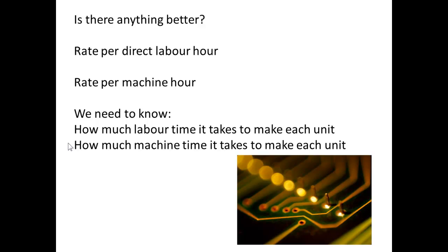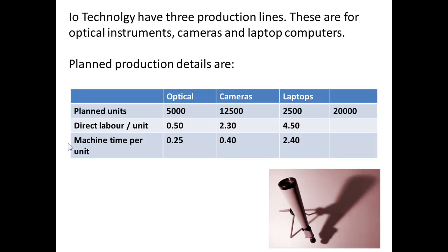What we need to know is how much time it takes to produce one unit in terms of labour, and how much time using machine time. We'll consider I.O. Technology, which has three production lines: optical instruments, cameras, and laptop computers. You can see the number of planned units for each — a total of 20,000 units. It takes far more time for the laptop at 4.5 hours compared to the optical items, which only take 0.5 hours per unit. A similar pattern is followed for machine time per unit.